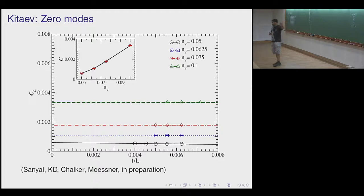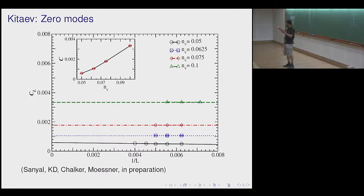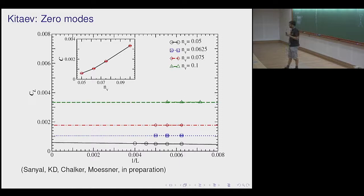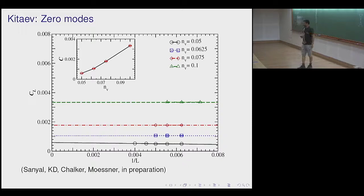The disorder put in is either site dilution or bond disorder on top of site dilution. The explicit results shown are for site dilution only. The difference between the two is basically unobservable: if you have site dilution, adding bond disorder on top doesn't seem to change anything. But if you have only bond disorder it's a different problem. The A and B sublattices are balanced — the number of A sites removed equals the number of B sites removed — and this is enforced at the level of every sample.